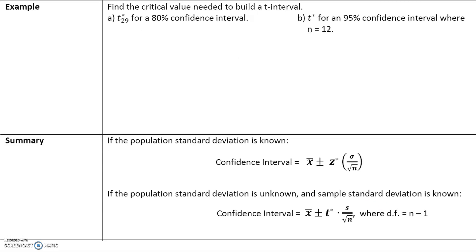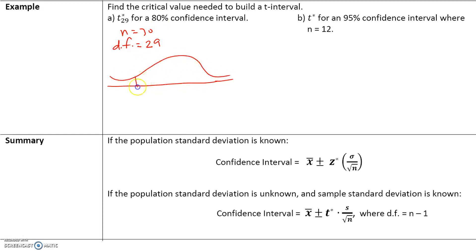Here's an example: find the critical value needed to build a t-interval. Let's find t-star sub 29, which means n equals 30 and the degrees of freedom is n minus 1, which is 29. We want to build an 80% confidence interval, so the area in the middle is 80%. Taking 100 minus 80 leaves 20%, split across two tails, giving us 10% in each tail. We can't use the normal distribution because we're using a t-interval, so let's look at the calculator.